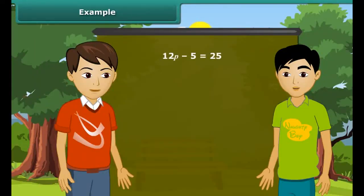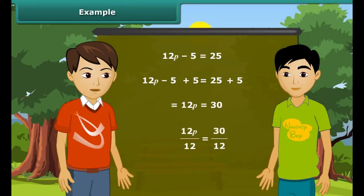Ajay, can you solve this equation? Yes. To get P on the left hand side, we will add 5 to both the sides. We get 12P is equal to 30. Now divide both sides by 12. We get the answer P as 5 upon 2. Very good.